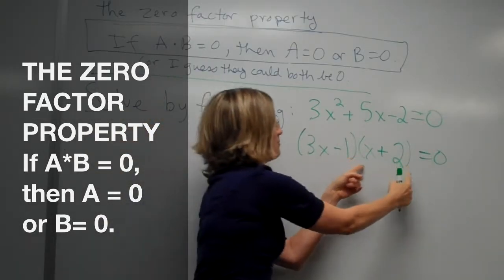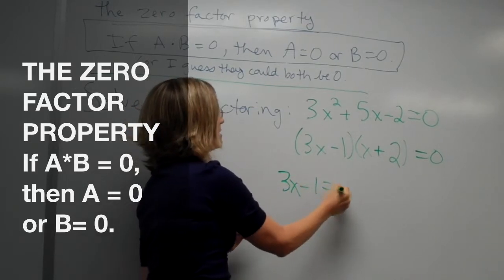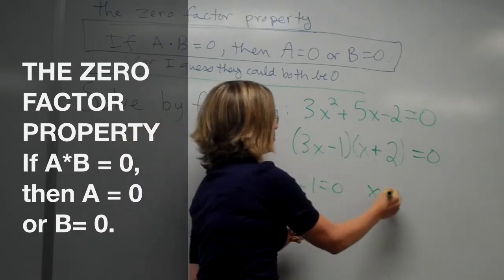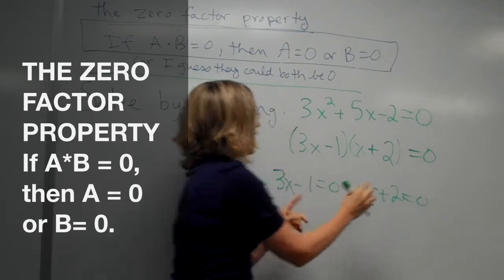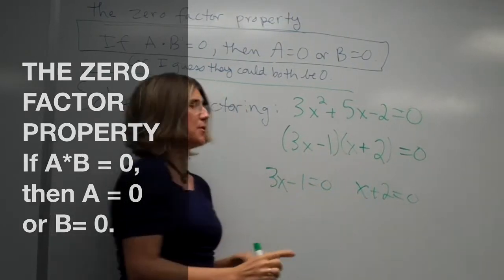So since A times B is 0, either the 3x minus 1 is 0 or the x plus 2 is 0. So either 3x minus 1 is 0 or x plus 2 is 0.